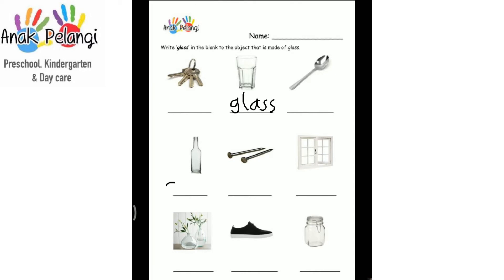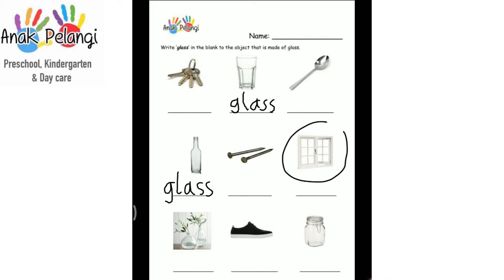Write the word glass. It is made of glass. The nails. Are they made of glass? No. The window. Does it have any glass? Yes. Write glass.